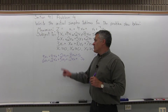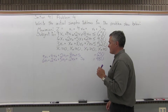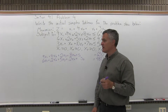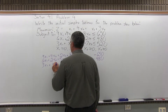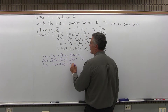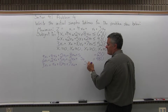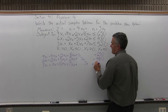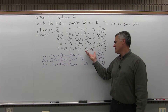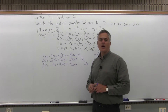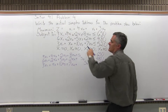The next constraint is 3x1 plus x2 plus 10x3 plus 7x4 less than or equal to 520. Converting that to an equation by adding s3 gives: 3x1 plus x2 plus 10x3 plus 7x4 plus s3 equals 520. The non-negativity constraints do not go into the matrix. However, the objective function — the thing that needs to be maximized — goes into the bottom row.